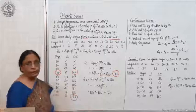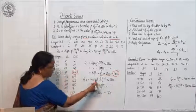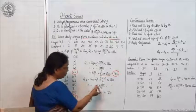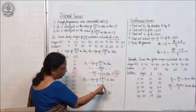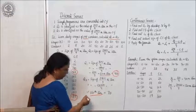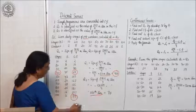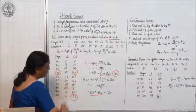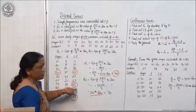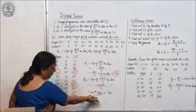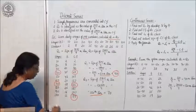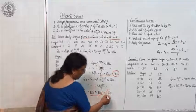Similarly, Q3 is the size of the 3(N+1)/4 item. That is 3 × 200/4 = 150th item. Now locate the 150th item in the CF column — it is more than 127 and less than 155, so the 150th item falls inside that interval. The value in the X column in front of that interval is Q3, which is 70.